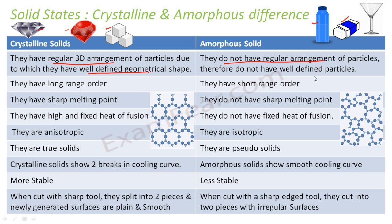Crystalline solids have long range order — if you expand the structure, you will see the same order over a long distance, perhaps thousands and lakhs of molecules. Amorphous solids have short range order; in fact, there is effectively no order in their arrangement.